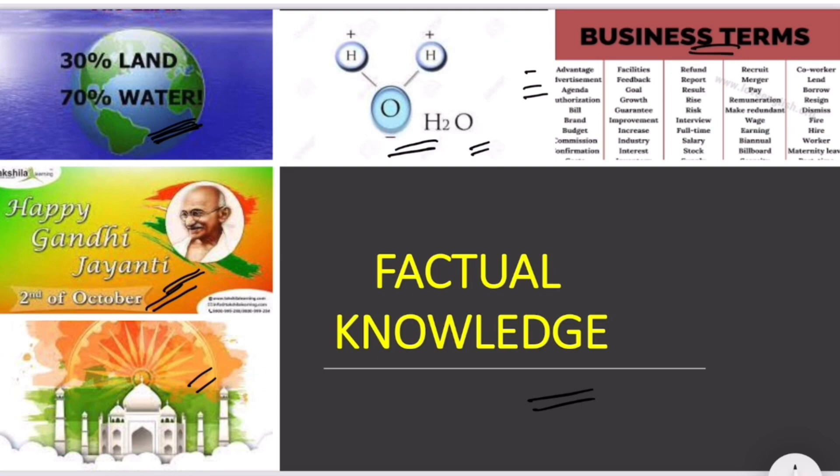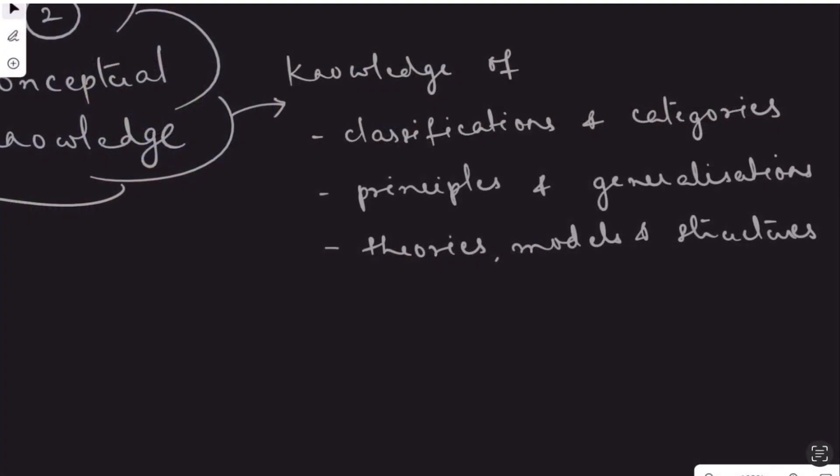The second one is conceptual knowledge, which goes deeper than factual knowledge and the topics are a little higher. For example, knowing that there is a concept called gravity and what is its effect on an object falls under knowledge, not understanding. This conceptual knowledge can be knowledge of classification and categories, knowledge of principles and generalizations, and knowledge of theories, models and structures.